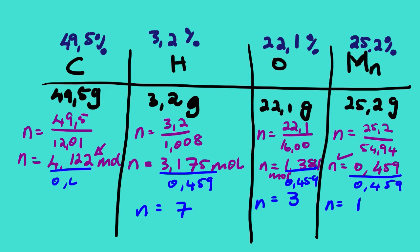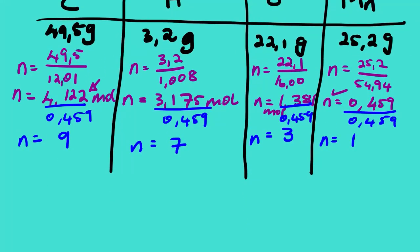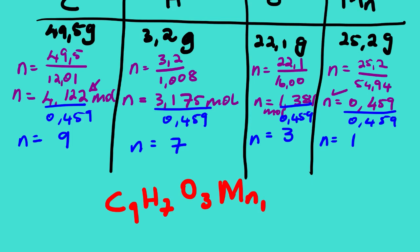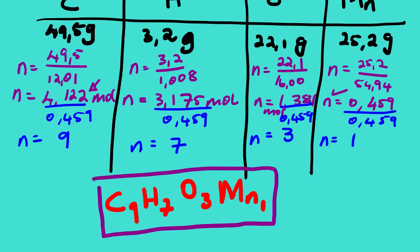Oxygen: 1.381 divided by 0.459 gives us 3. And manganese divided by 0.459 gives us 1. So we can conclude that our empirical formula is C9H7O3Mn. This is the empirical formula — our final answer.